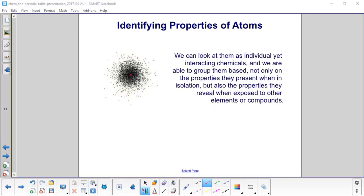We can look at these atoms as individual yet interacting chemicals, and we're able to group them, not only in the properties they show when they're by themselves, but also the properties they show when exposed to other elements or compounds.